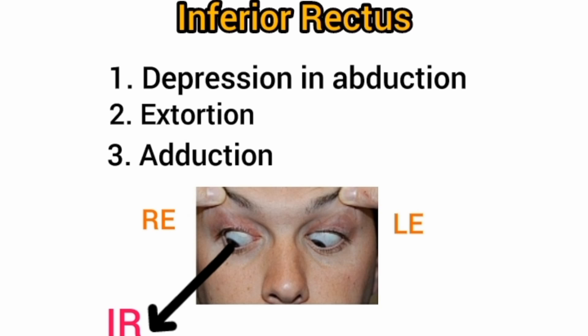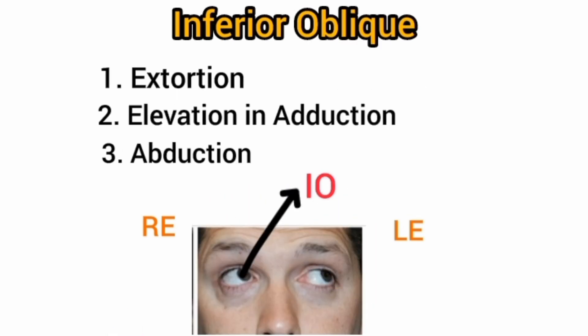The primary function of the inferior rectus is to depress the eyeball in the abducted state — when you are looking away from the nose and downward. Its secondary function is extorsion of the eyeball and its tertiary function is adduction. In the picture, the right eye is in a downward and abducted state, which is the action of the inferior rectus.